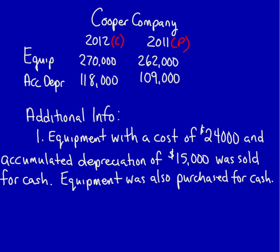Information provided is equipment and accumulated depreciation. Make sure you have downloaded the cash flow questions provided. We know from the additional information that equipment with a cost of $24,000 and accumulated depreciation of $15,000 was sold for cash. Equipment was also purchased for cash — note that this piece of information is not always given to students, as some instructors expect students to discover it themselves.